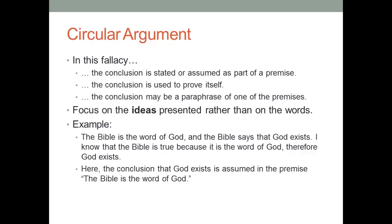The first of the eight fallacies is the circular argument. To understand this type of fallacy, we need to think again about the structure of a logical argument, in which we have a premise or premises, and we have the conclusion. This fallacy is called a circular argument because the conclusion is stated or assumed as part of the premises. We need to focus on the ideas rather than on the words, so you might not see the same words that appear in the conclusion appearing in the premises, but the idea will be the same.